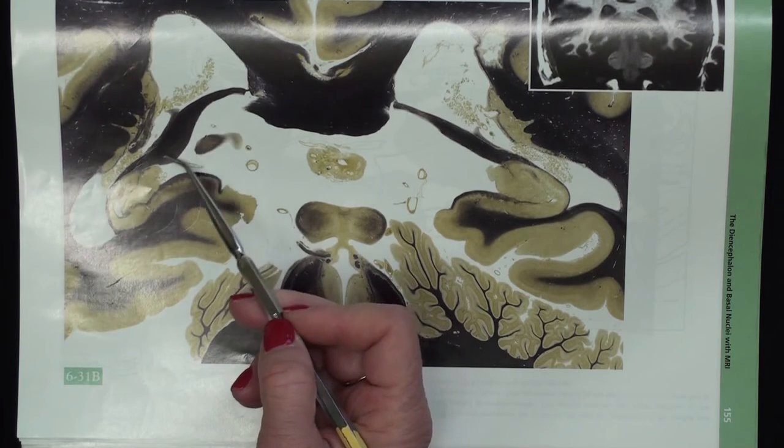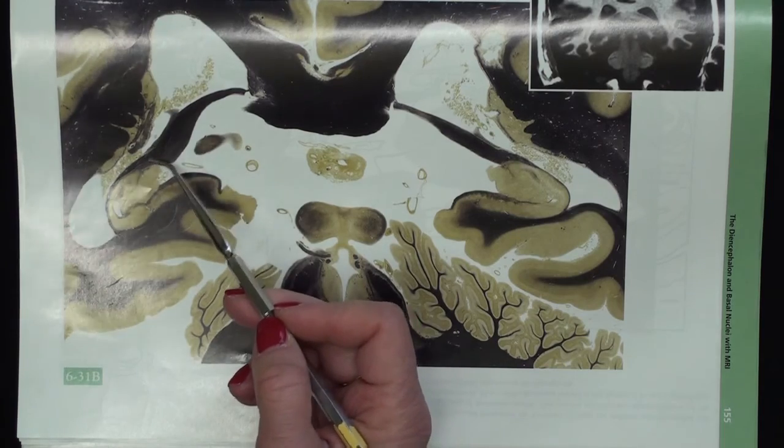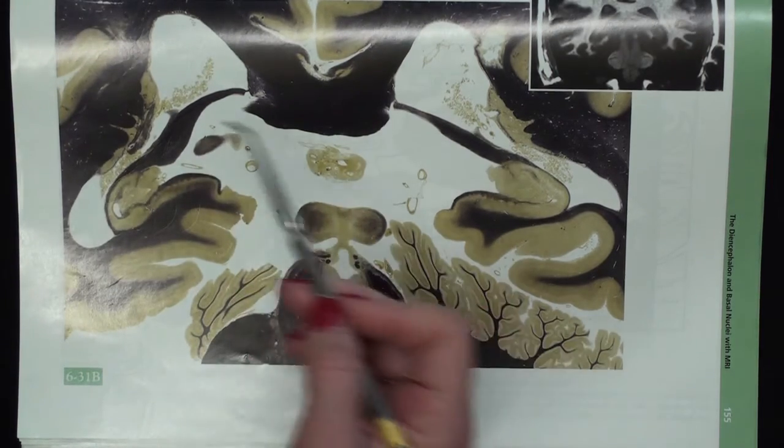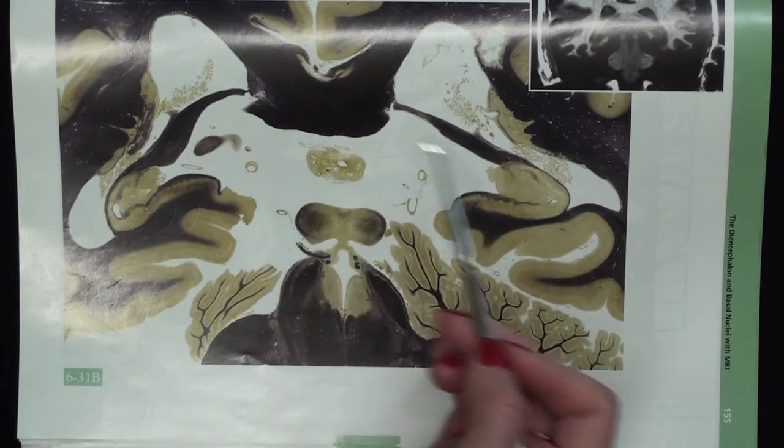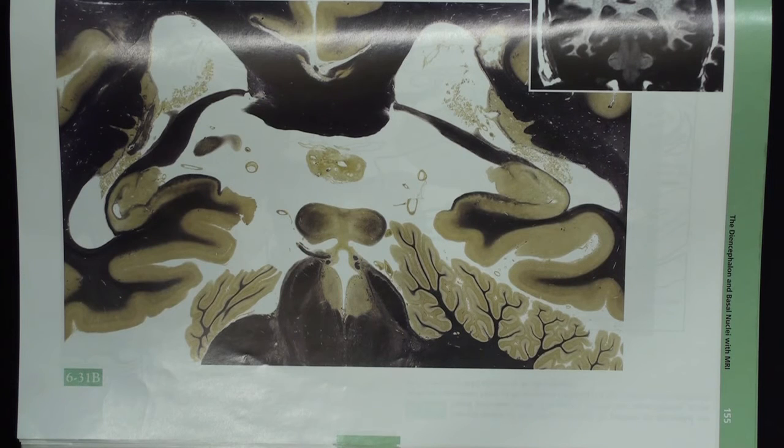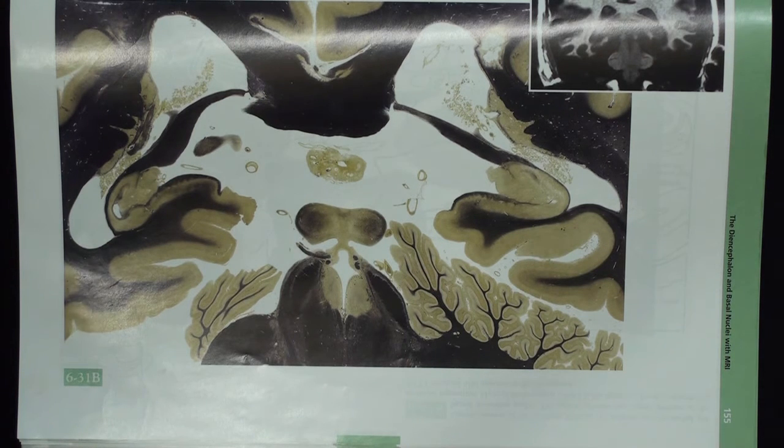Crus is singular and means arm, so one arm is a crus. Two arms are the crura of the fornix. Those crura will come together in the midline to form the body of the fornix, which we can't see on this particular view.